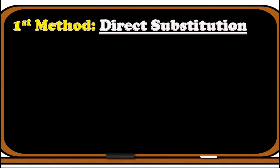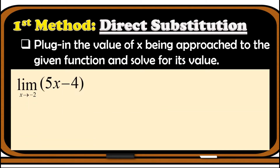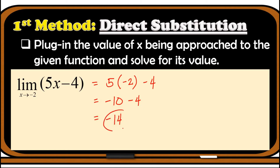Let's begin with the first method: direct substitution. In direct substitution, we just simply plug in the value of x being approached to the given function and solve for its value. For example, find the limit of 5x minus 4 as x approaches negative 2. Applying direct substitution, x is replaced with negative 2: 5 times negative 2 minus 4 equals negative 10 minus 4, which gives us negative 14.